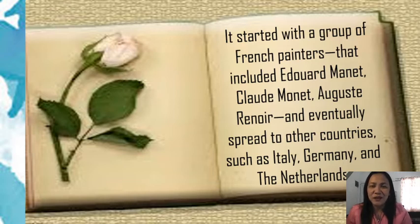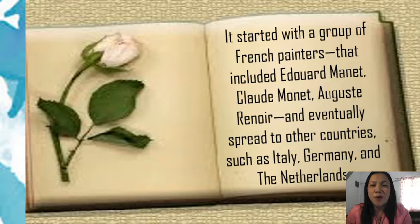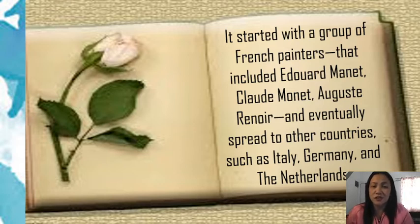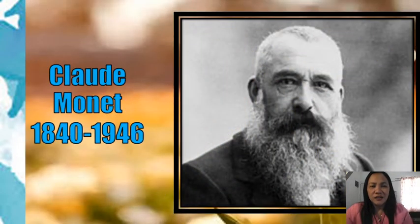The three painters are: first, Edouard Manet; second, Claude Monet; and third, Auguste Renoir. These are French names, which is why they are pronounced this way. Impressionism eventually spread to other countries such as Italy, Germany, and the Netherlands.